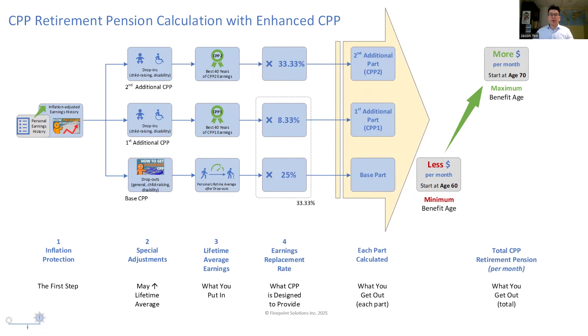That's a basic overview of how your CPP retirement pension is calculated — what's going on behind the scenes when people like myself are doing your CPP calculations. It can be important to look at all the individual parts, because sometimes a decision like the age you start CPP will decrease your pension amount in one part but also increase it in another. I enjoy figuring all that out so you can get the most out of the CPP based on the options you have and your own priorities and individual circumstances.